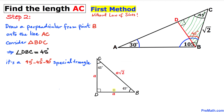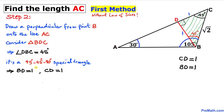In a 45-45-90 special triangle, the two legs are equal. If each leg is 1 unit, the hypotenuse is 1 times square root of 2, which equals square root of 2. Since our hypotenuse BC is already square root of 2, the two legs must each have unit length. Therefore side BD is 1 unit and side CD is 1 unit.